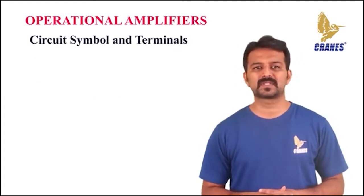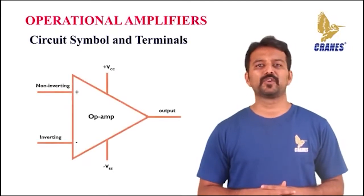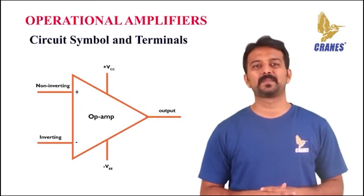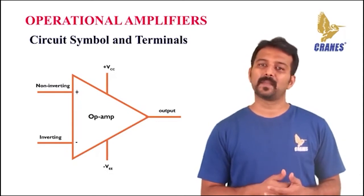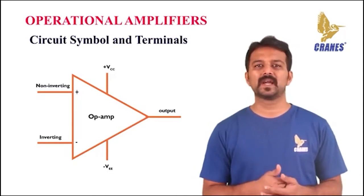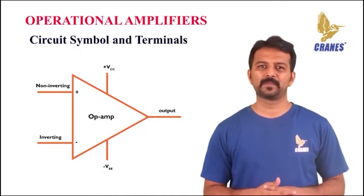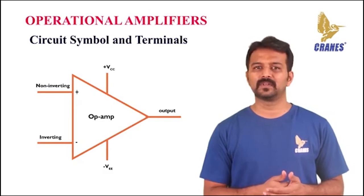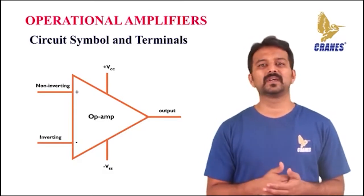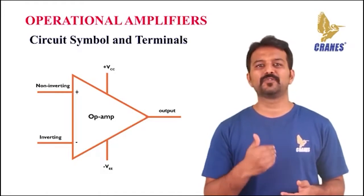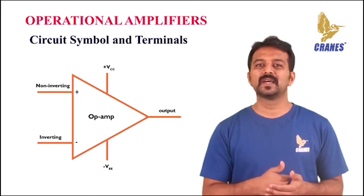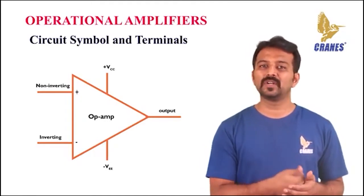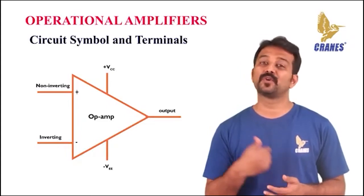Let us look at the circuit symbol and the terminals associated with op-amps. In the circuit symbol of an op-amp, there are two input terminals, one output terminal, and two power supply terminals. These are plus and minus supply voltages, that is plus VCC and minus VEE, and typically these values range from plus or minus 5 to plus or minus 22 volts. The input terminals are designated as the inverting input (minus sign) and the non-inverting input (positive sign). A positive going voltage applied to the inverting input produces a negative going output, and a positive going signal at the non-inverting input generates a positive going output.